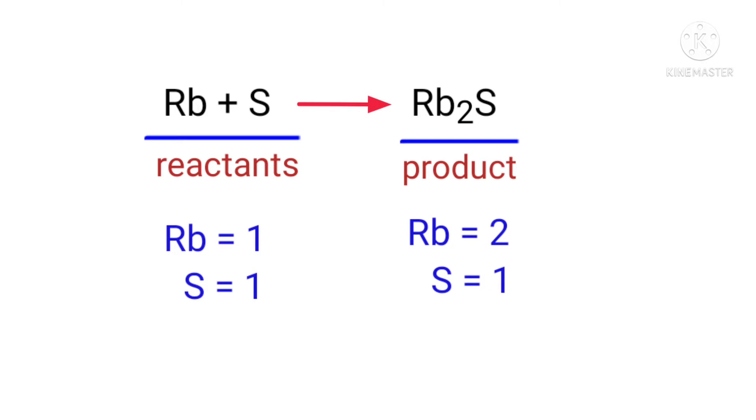On the reactants side, there are one rubidium atom and one sulfur atom present. On the product side, there are two rubidium atoms and one sulfur atom present. The number of atoms are not balanced on both sides.